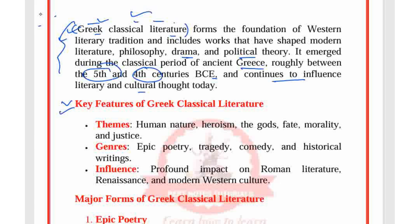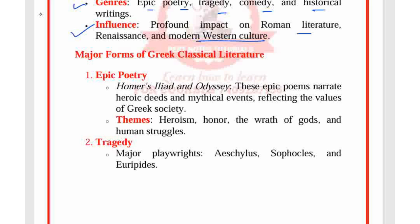If we talk about key features of Greek classical literature, we can go through themes, genre, and influence. Themes include human nature, heroism, the gods, fate, morality, and justice. In terms of genre, there is epic poetry, tragedy, comedy, and historical writings. Its influence had a profound impact on Roman literature, the Renaissance, and modern Western culture.